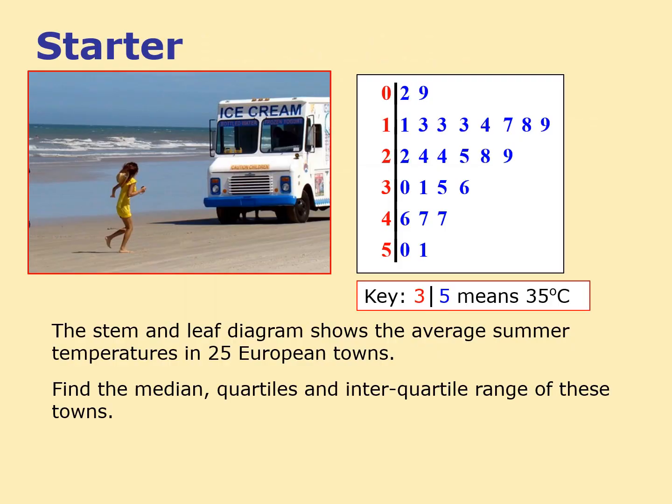I'm going to look at initially a nice gentle starter which is all to do with a stem and leaf diagram. This stem and leaf diagram is all about the temperatures in 25 European towns — the average summer temperatures. Notice the key: the key is always important in a stem and leaf diagram, so notice 3/5 means 35. Sometimes it might mean 3.5 or 135 for instance. It says here: find the median, the quartiles, and the interquartile range from these towns.